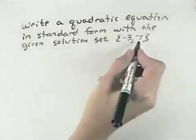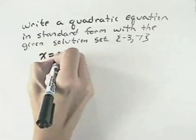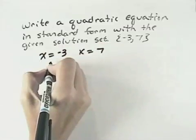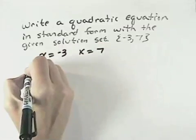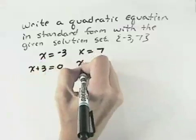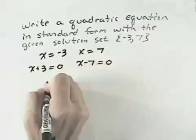So what we have here are the solutions -3 and 7. That means x equals -3 and x equals 7. If we convert these to factors by having 0 on one side, we would add 3 to both sides to get x plus 3 equals 0, and subtract 7 to get x minus 7 equals 0.